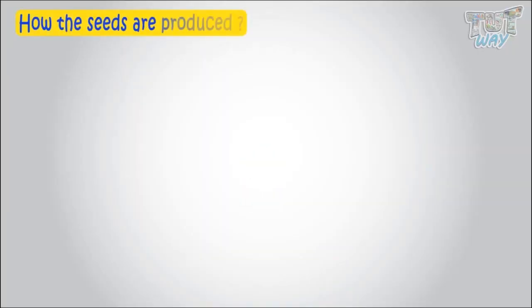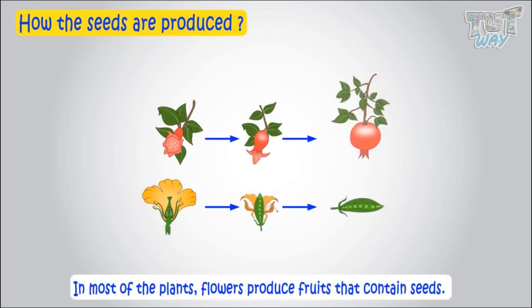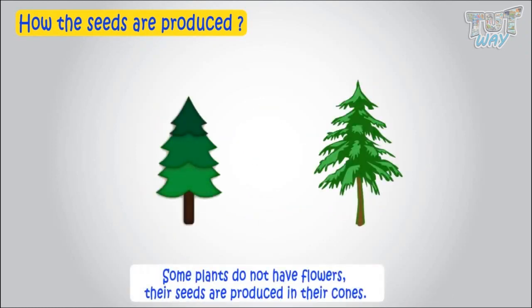Let's see how this seed is produced. In most of the plants, flowers produce fruits that contain seeds. But some plants that do produce seeds do not have flowers. Some trees, like pine and fir, do not have flowers. Their seeds are produced in their cones.